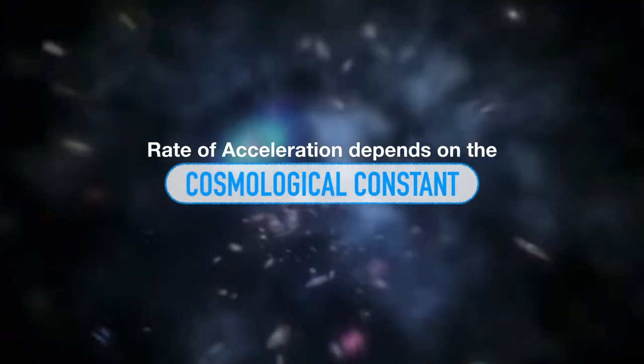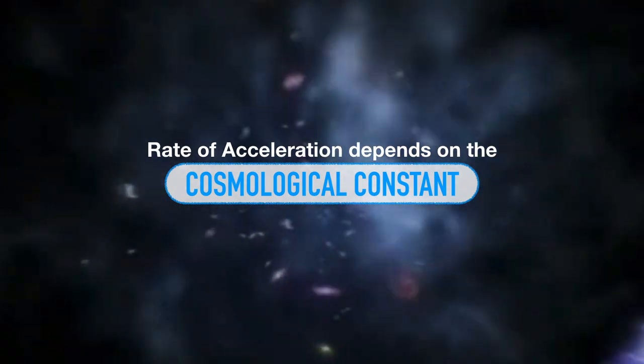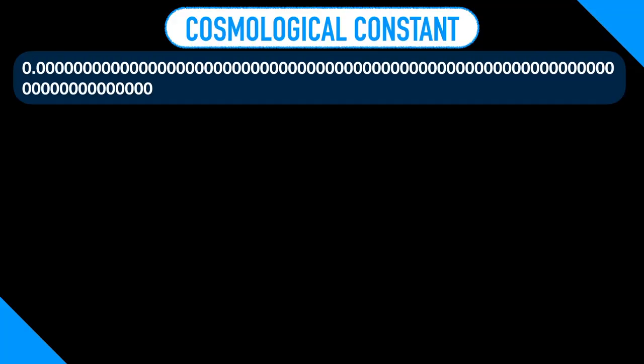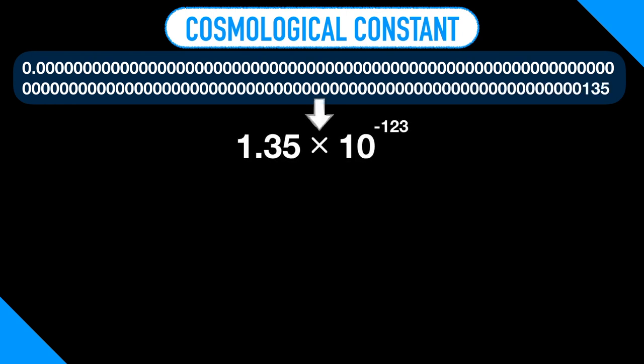One of the most astonishing cases of fine-tuning, though, is what's called the cosmological constant. What is that? Well, in 2011, the Nobel Prize in Physics was awarded to a team of researchers who discovered that space was accelerating in its expansion, not decelerating as was previously thought. The rate of this acceleration is related to a parameter called the cosmological constant. This constant turns out to be an extremely small positive number. 1.35 times 10 to the negative 123rd Planck units, to be exact.